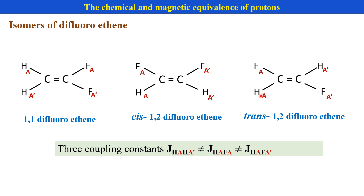In that case also, the coupling of HA with FA and HA with FA' is not the same. There are three types of coupling constants: the coupling between HA and HA', the coupling between HA and FA, and the coupling between HA and FA' — all three coupling constants are not the same.